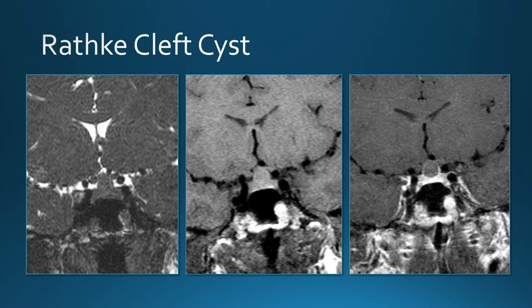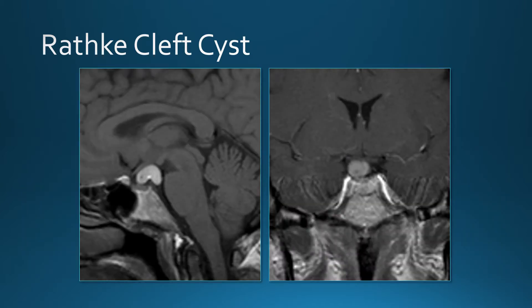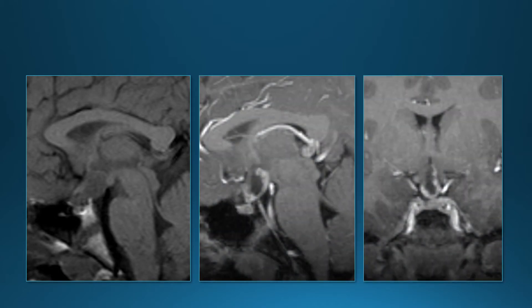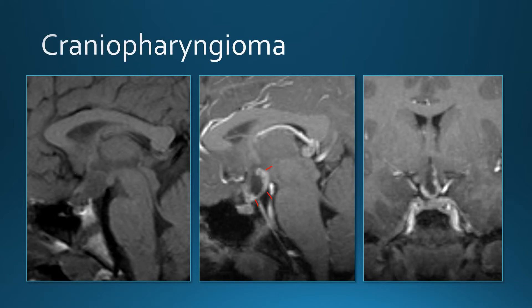Another Rathke cleft cyst, and another one that's very bright on T1 with a somewhat unusual shape. Another suprasellar mass — bright on T2 and bright on FLAIR — could it be a Rathke cleft cyst? On T1 post-contrast this one has nodular enhancement in the wall, which means it's not a Rathke cleft cyst. This one is a craniopharyngioma.